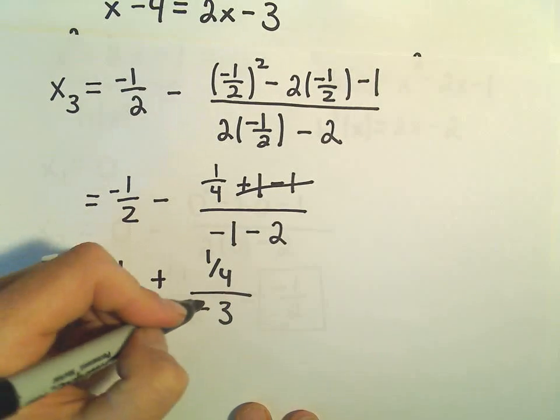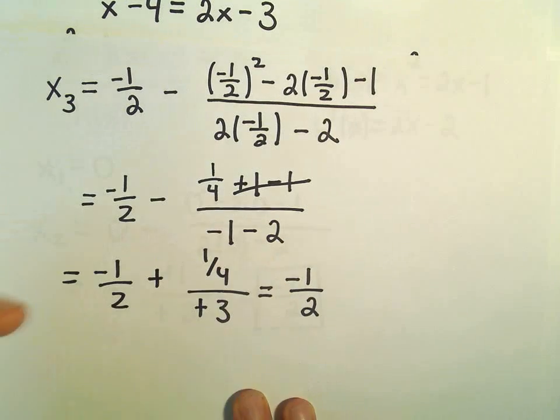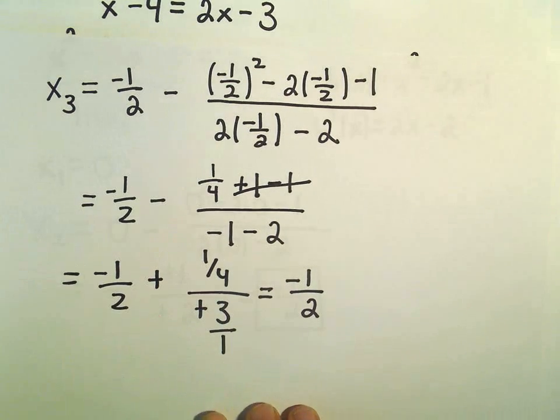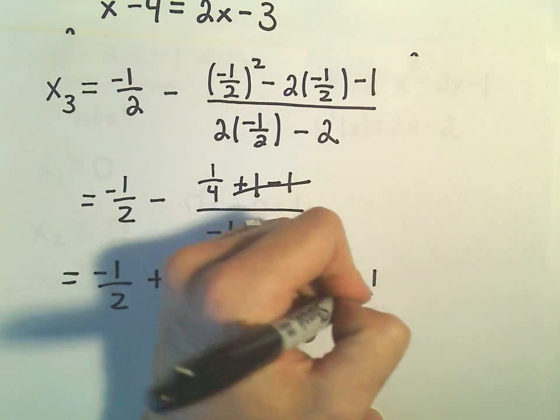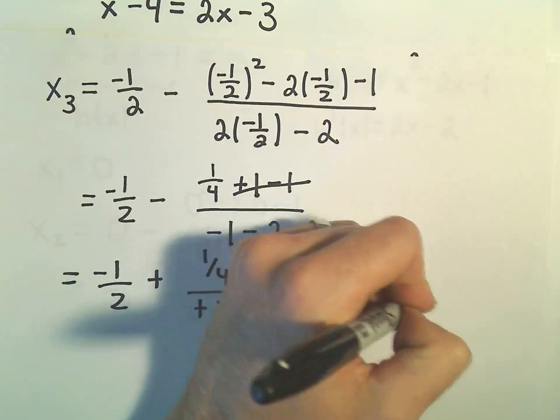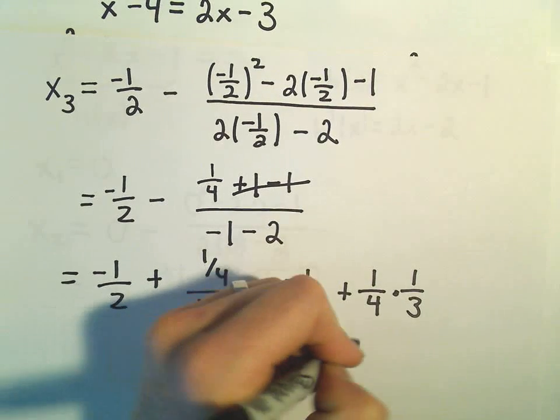A negative and a negative make a positive. So this is negative 1 over 2. So a fourth divided by 3, you can think about that as being 3 over 1. So how do we divide fractions? We flip and multiply. So we would have 1 fourth times 1 third. So we have negative 1 over 2 plus a 12th.